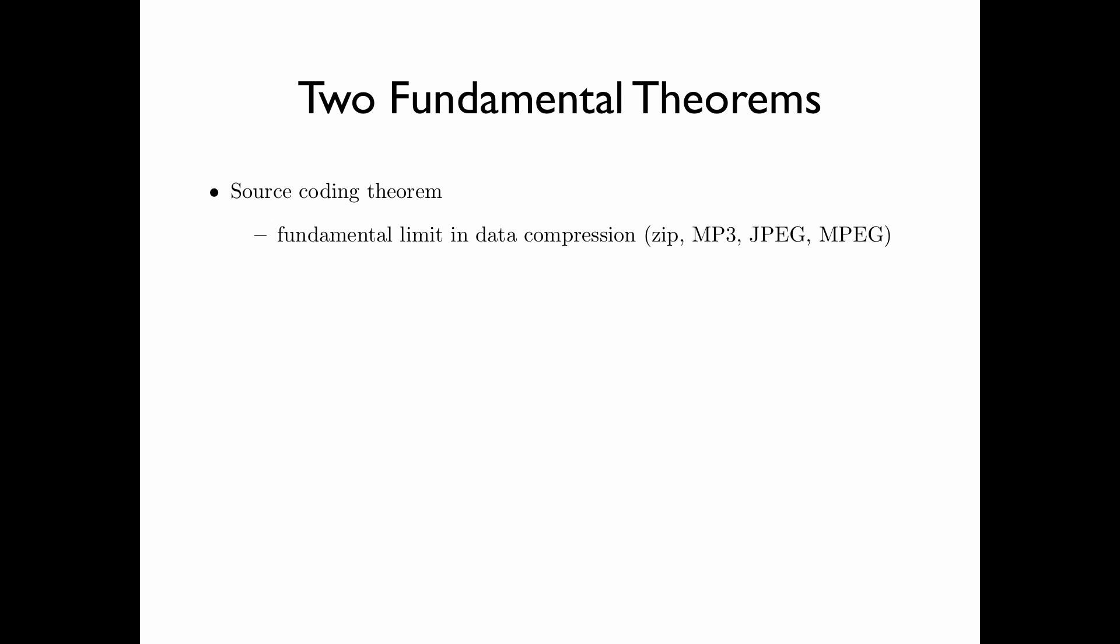Nowadays, there are many forms of data compression. For example, we use zip for general file compression, in particular for text files. Audio files can be compressed in the MP3 format, image files can be compressed in the JPEG format, and video files can be compressed in the MPEG format. The idea of the source coding theorem is that no matter how smart the data compression algorithm is designed, there is always a minimum size that the file can be compressed, and this is what it means by a fundamental limit.